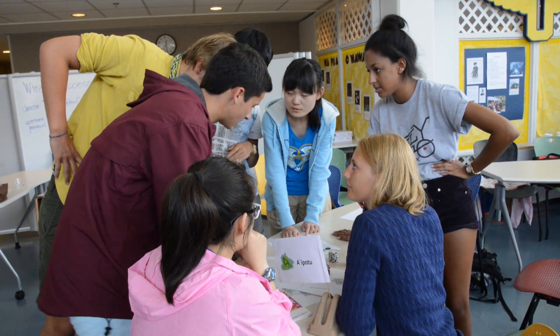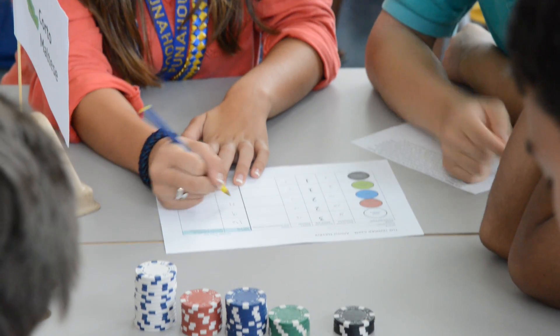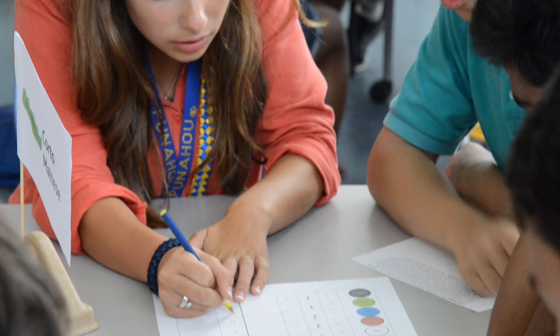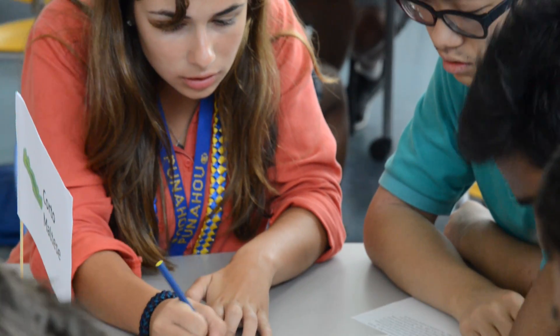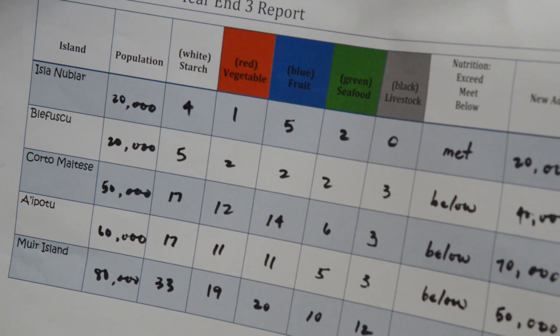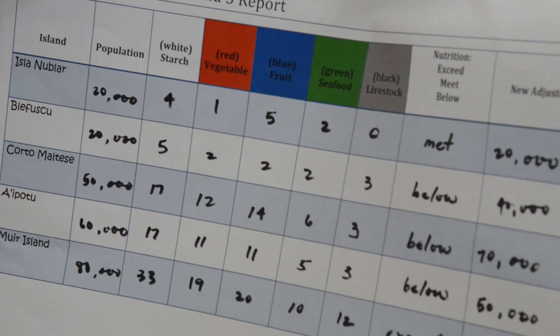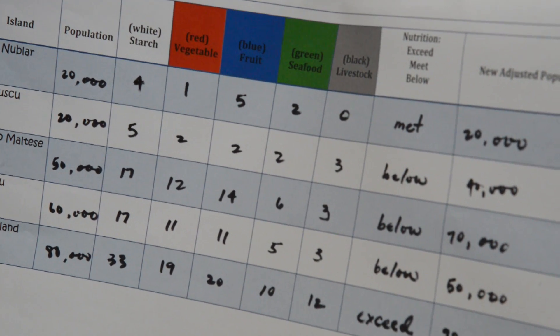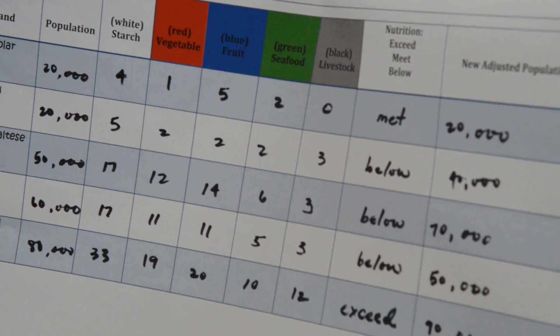At the end of each round, the students tally what they've acquired, what they have a surplus of, what they have a deficit of, and then their population either declines or increases depending on if they've met their food requirements.